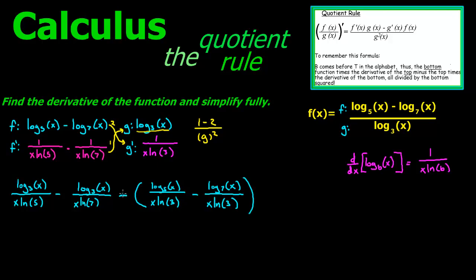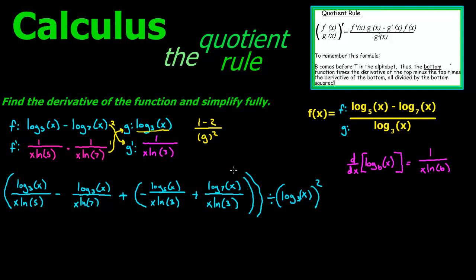Now we can switch our signs around so that the subtracted group becomes distributed correctly — the first term becomes positive, the next negative, and the last positive. This whole expression is divided by g squared, which is log base 3 of x, squared.